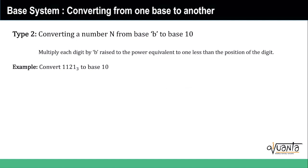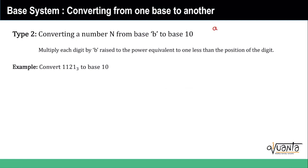We will multiply each digit by b raised to the power equivalent to one less than the position of the digit. Which means if we have a three-digit number x, y, z in base b and we want to convert it to base 10, we will multiply x by b raised to the power, the position.